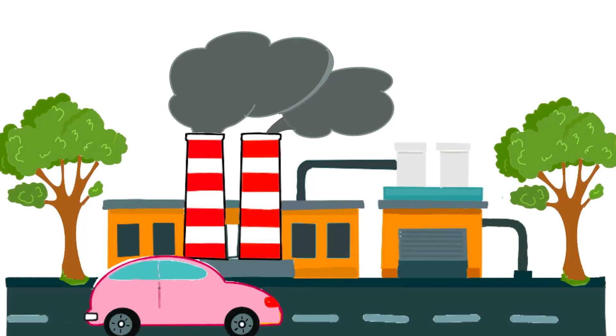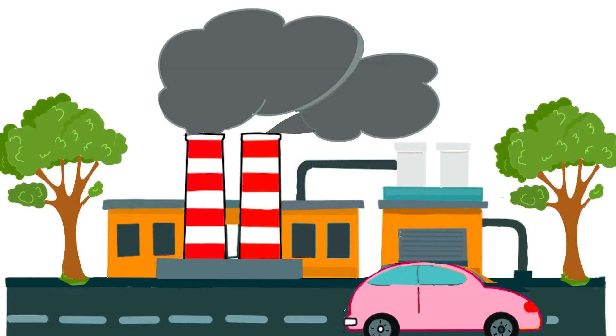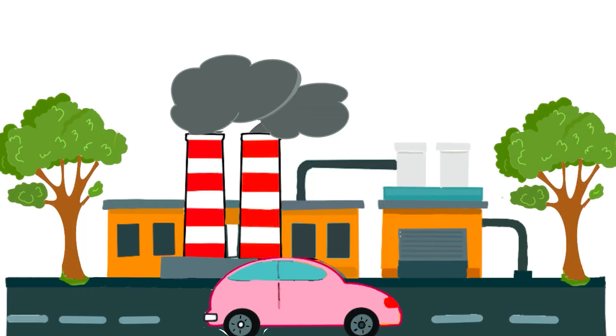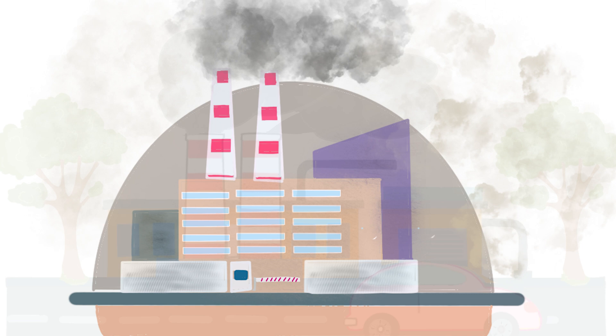Some emissions are direct, like the exhaust from your car, while others are indirect, like the emissions from the factory that made your TV.